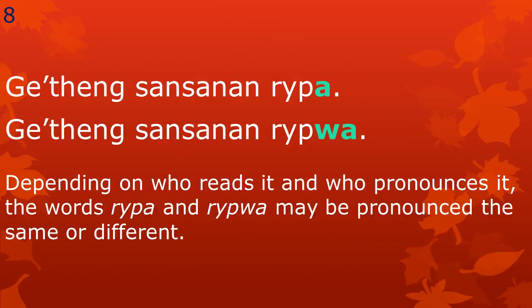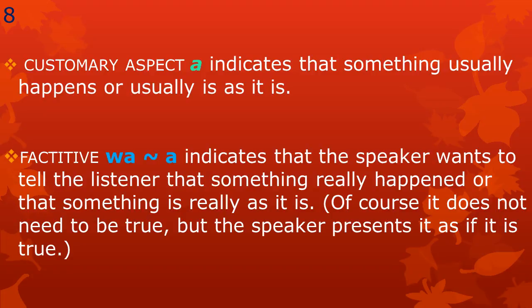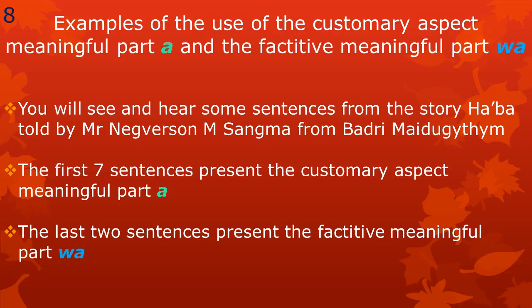Depending on who reads it and who pronounces it, the words rpa and rpwa may be pronounced the same or different. Let us look quickly at the difference in meaning between the factative and the customary aspect. Customary aspect a indicates that something usually happens or usually is as it is. Factative wa or a indicates, among other things, that the speaker wants to tell the listener that something really happened or that something is really as it is. Of course, it does not need to be true, but the speaker presents it as if it is true.